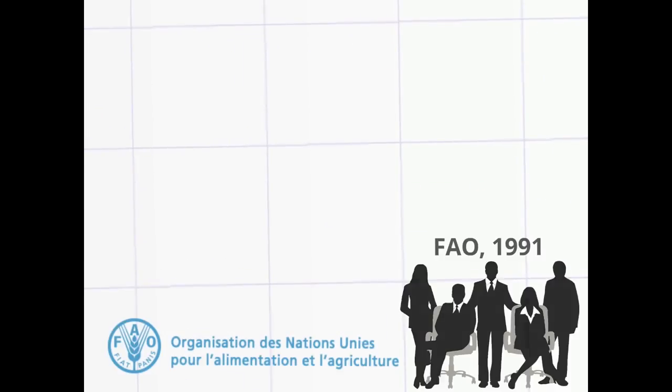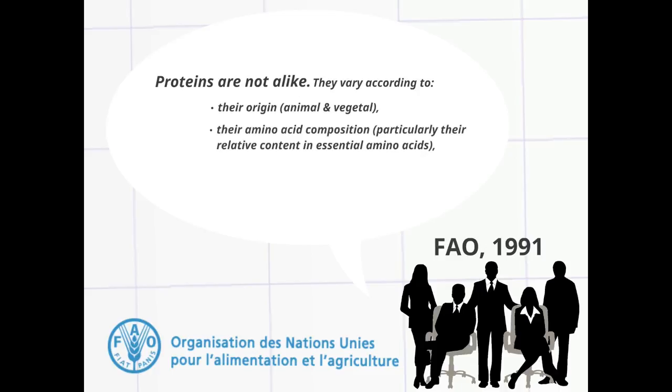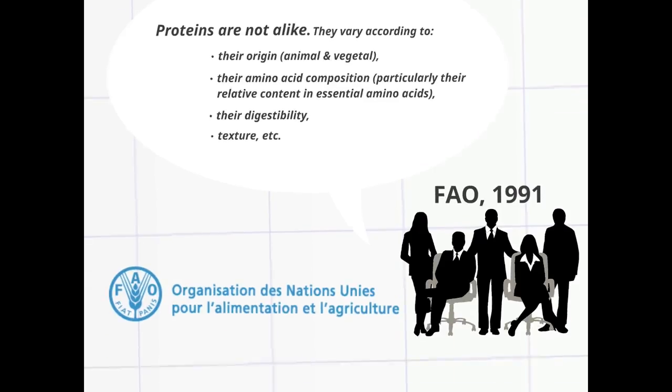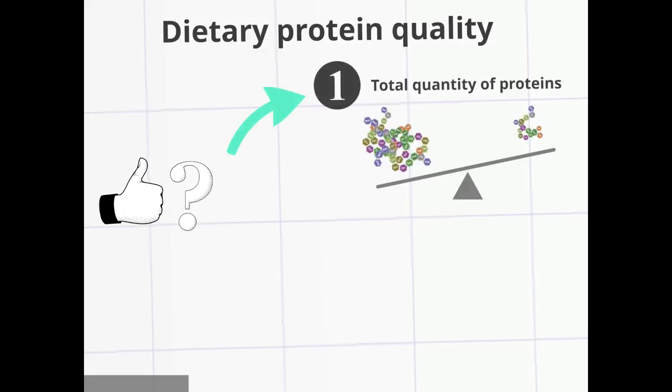Quantity and quality. According to the FAO 1991, proteins in food are not alike. They vary according to their origin, their amino acid composition, their digestibility, texture, etc. There are two things to take into account to judge dietary protein quality. The first aspect is the total quantity of protein. For example, meat is known as a substantial protein source.